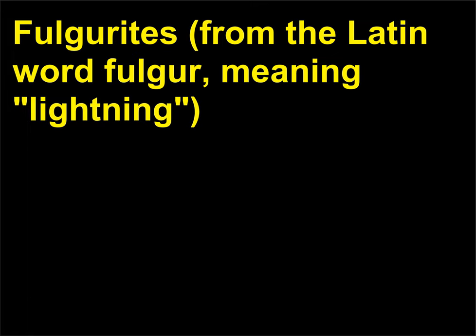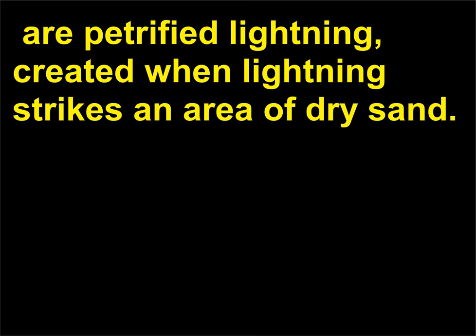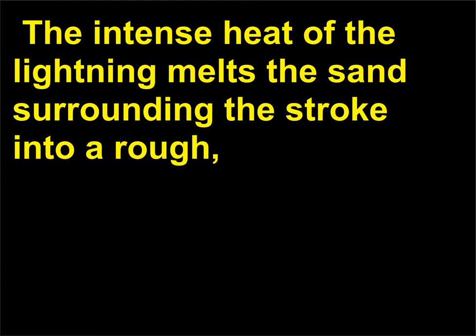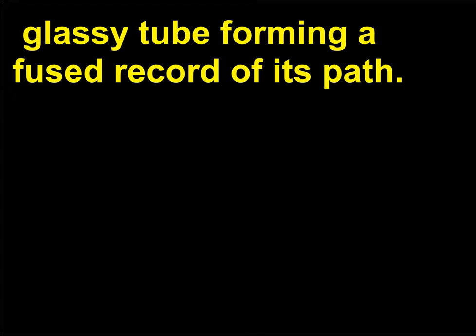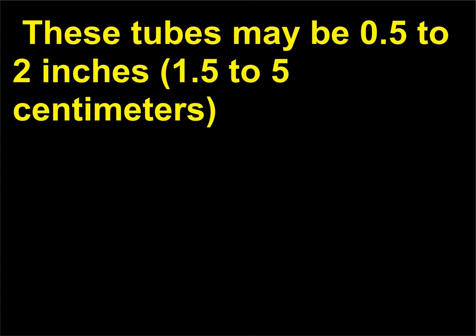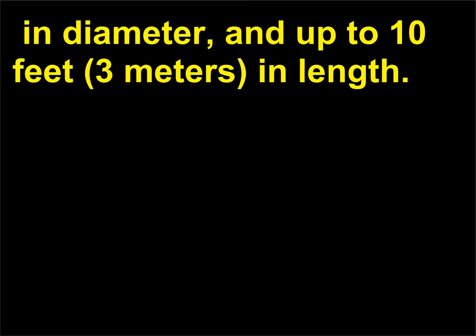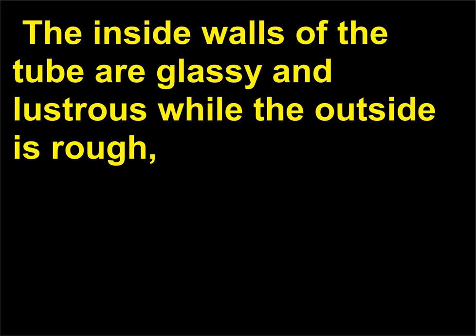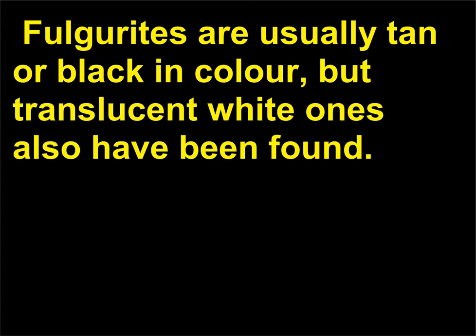What are fulgurites? Fulgurites, from the Latin word fulgur meaning lightning, are petrified lightning, created when lightning strikes an area of dry sand. The intense heat of the lightning melts the sand surrounding the stroke into a rough, glassy tube forming a fused record of its path. These tubes may be 0.5 to 2 inches (1.5 to 5 centimeters) in diameter and up to 10 feet (3 meters) in length. They are extremely brittle and break easily. The inside walls of the tube are glassy and lustrous while the outside is rough with sand particles adhering to it. Fulgurites are usually tan or black in color, but translucent white ones also have been found.